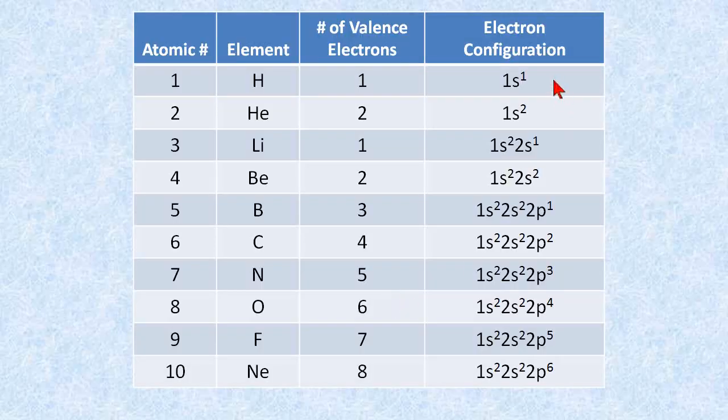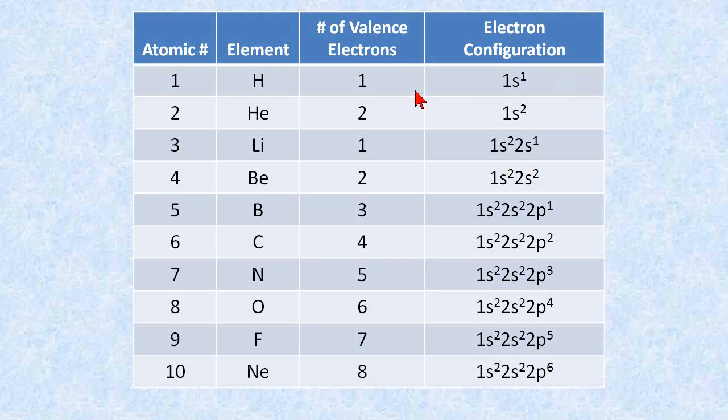The way we track the electron configurations is as we start with the atomic number one through ten. We label them as 1s1, and that's the electron configuration for hydrogen. 1s2, that's the electron configuration for helium. In other words, you're in the first period, you're in the s sub level or subshell, and then there's two electrons in it.